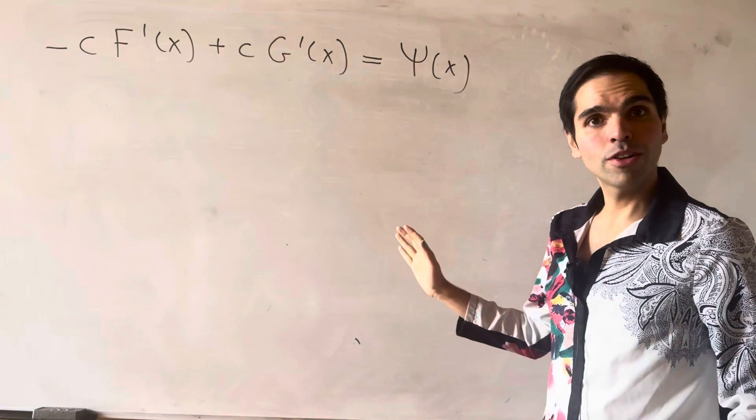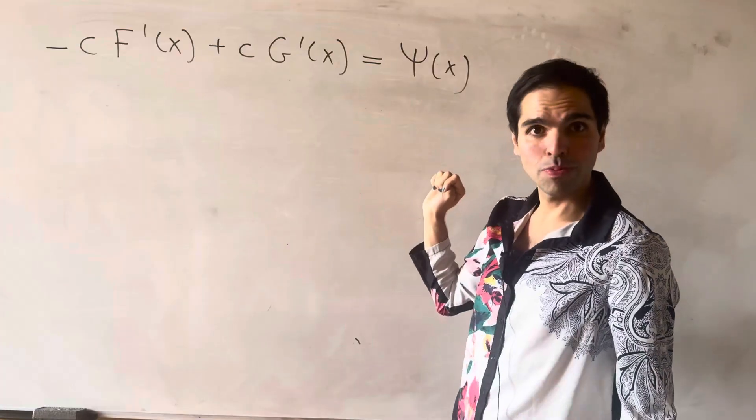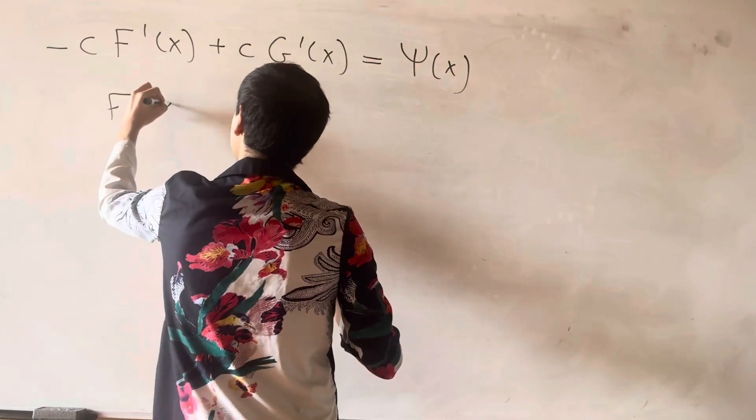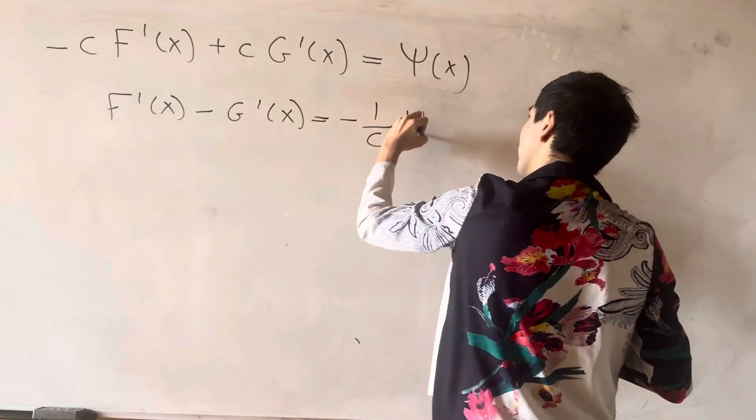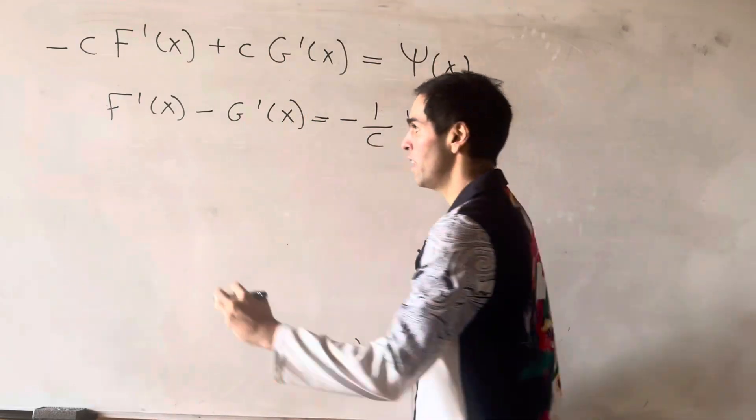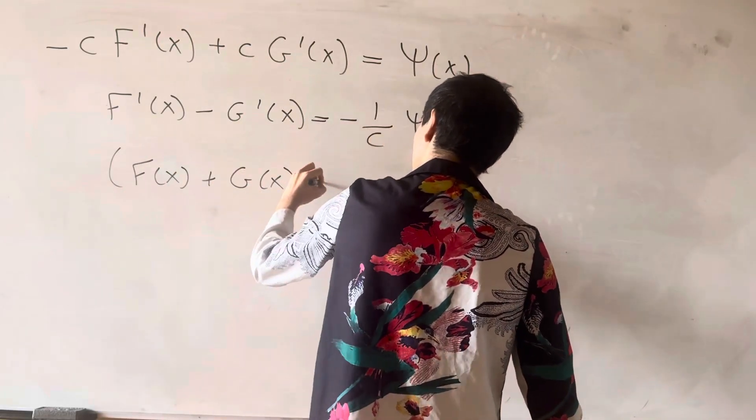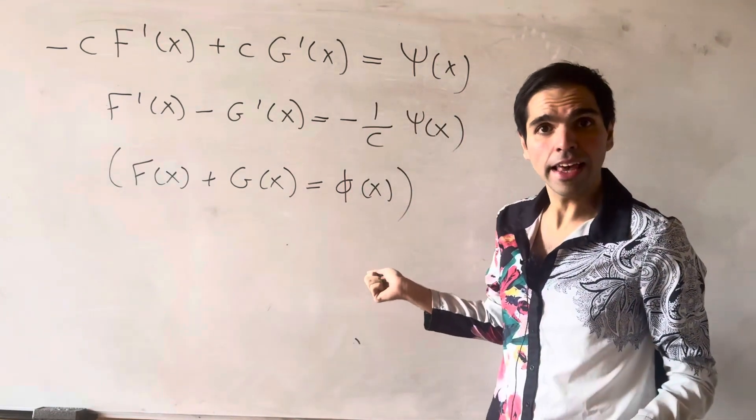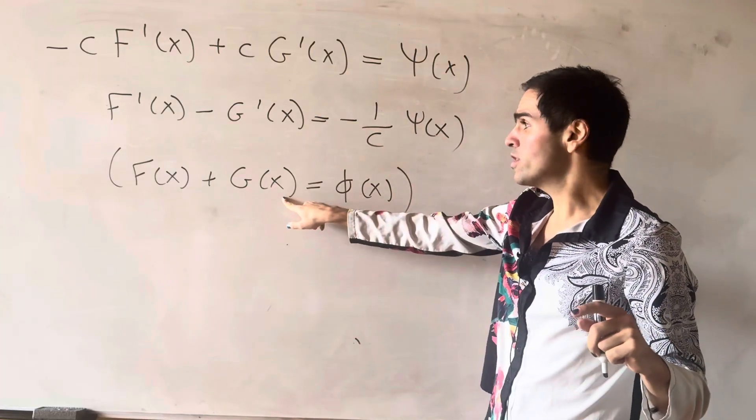And so, to recap what we have so far, we have minus c f prime of x plus c g prime of x equals psi of x, which we can rewrite as f prime of x minus g prime of x is minus one over c psi of x. Now, compare this with our previous formula, which was f of x plus g of x equals phi of x. It's sort of the same, except the main difference is that this formula involves derivatives, versus this one does not.